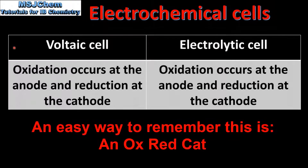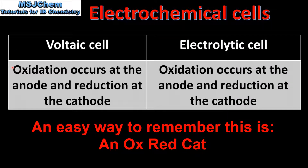To end the video we look at the similarity. For both types of cells oxidation occurs at the anode and reduction occurs at the cathode.